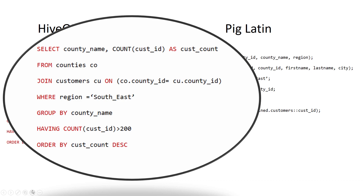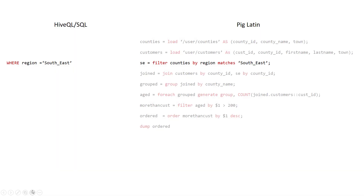We then order the results in descending order. This is something most of you will be familiar with and is quite reasonable to understand, whereas with Pig Latin you have to give much more detail as to exactly what steps to perform. We'll have a look at that one by one, starting with the first line that matches the HiveQL — in HiveQL we look at the region southeast.